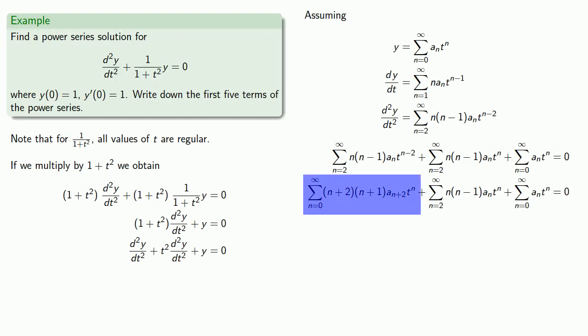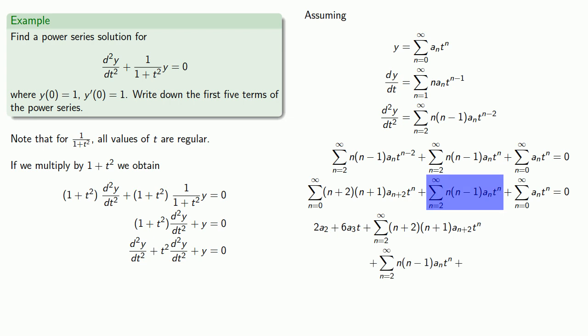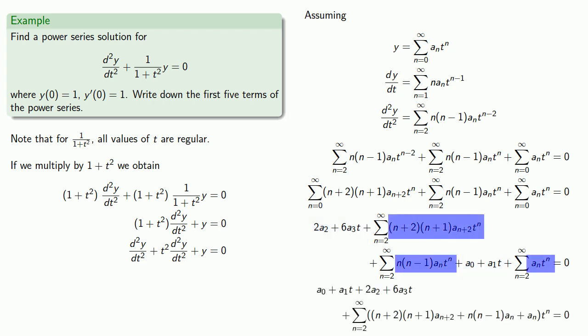So we can rewrite our first series to start at 2. Our second series already starts at 2. And our third series can be rewritten to start at 2. So separating out our leftover bits and combining the series into a single series, all of which should be equal to 0. So now we need to find our coefficients.